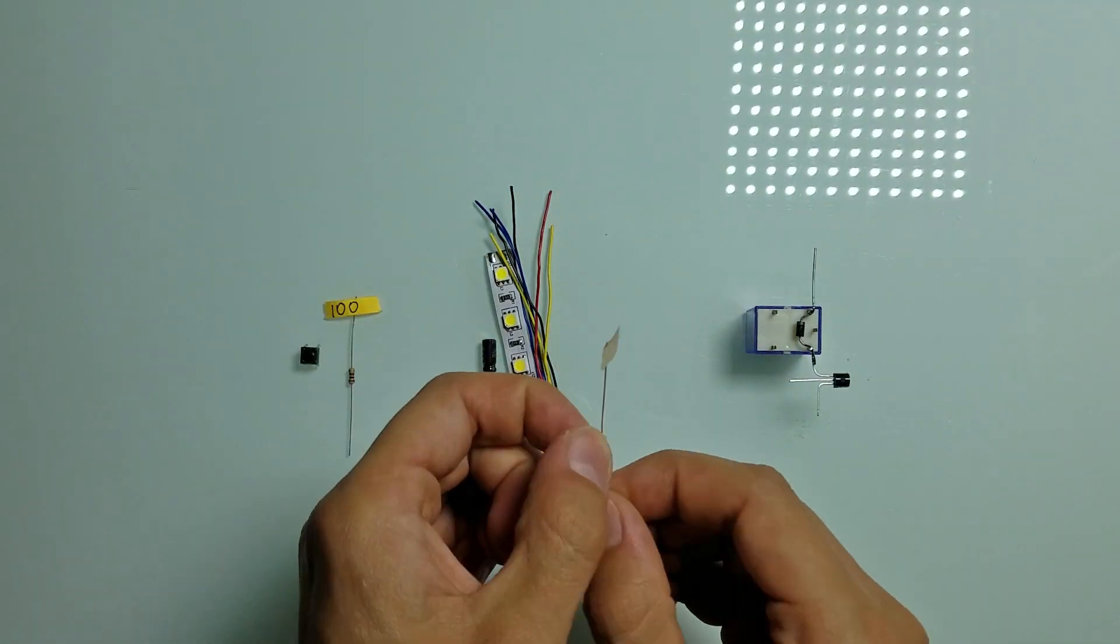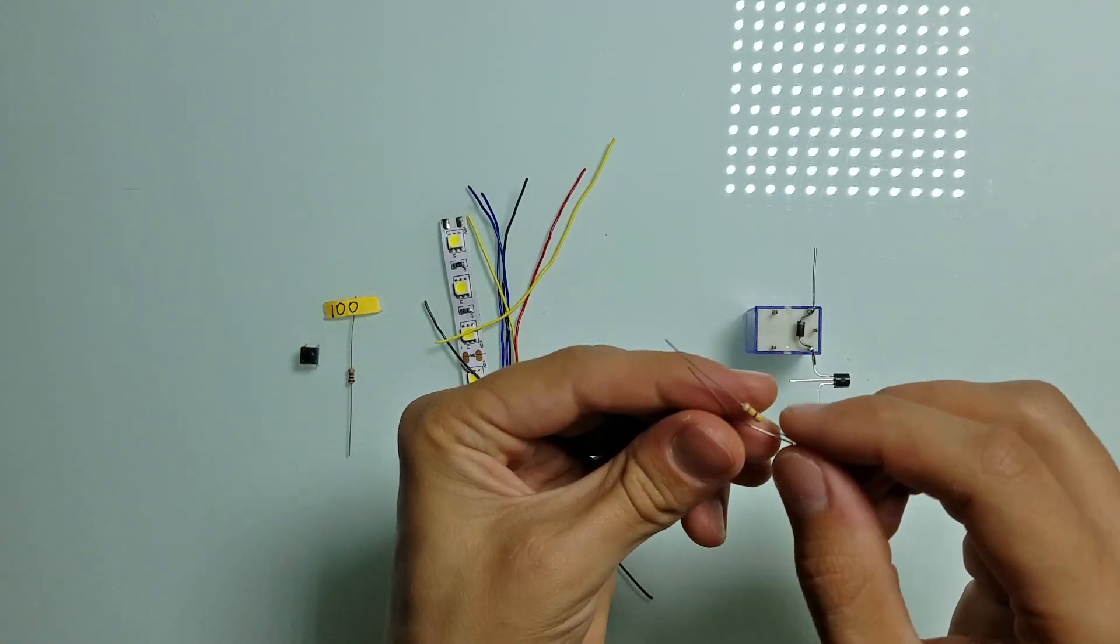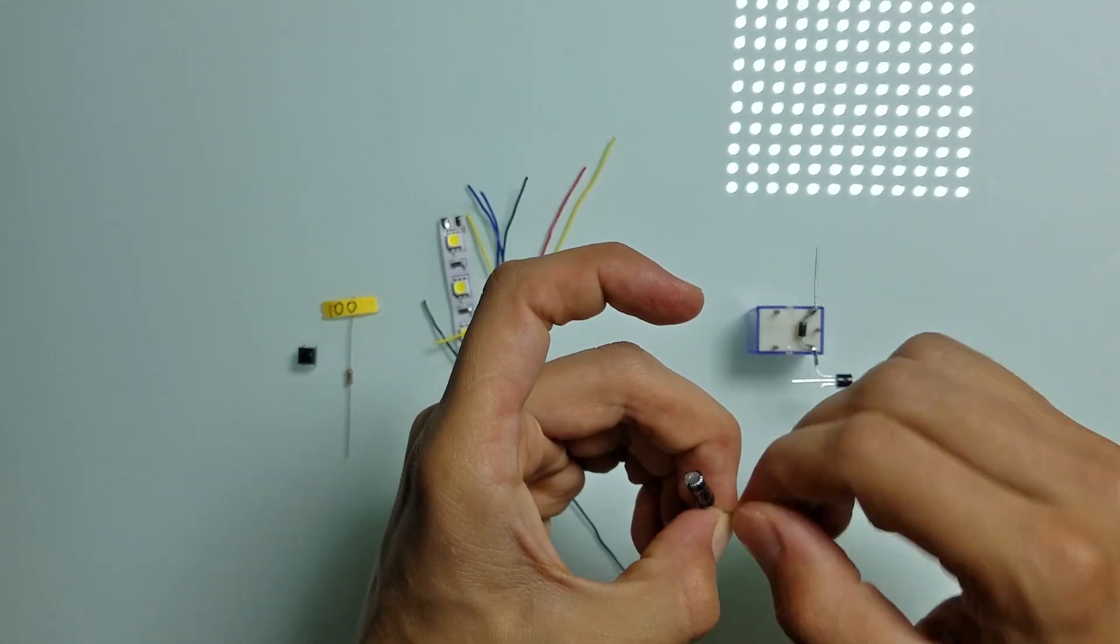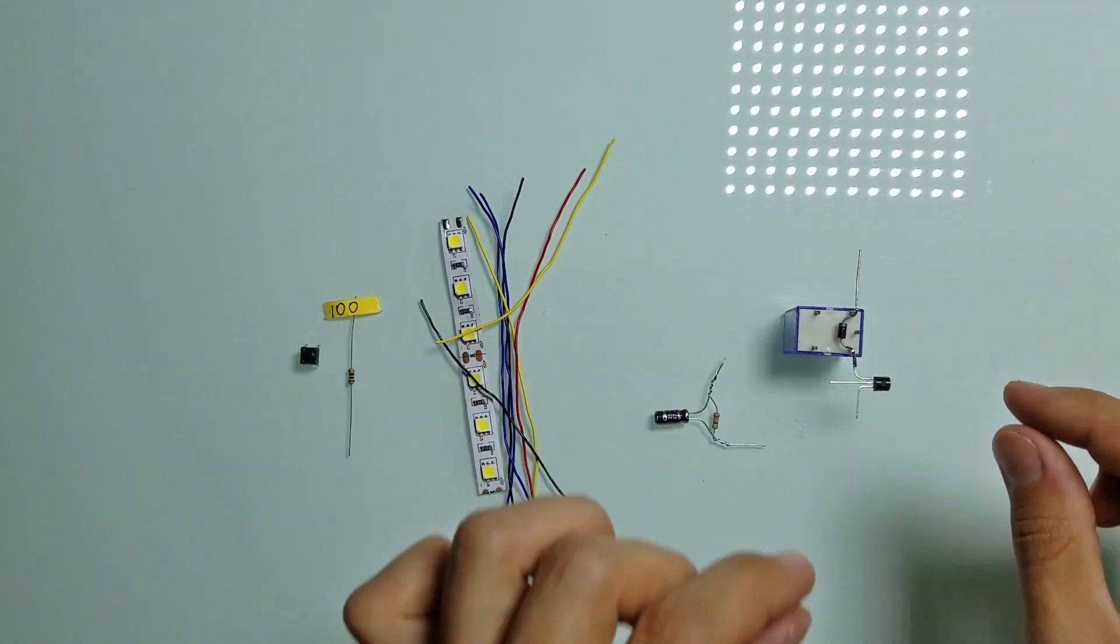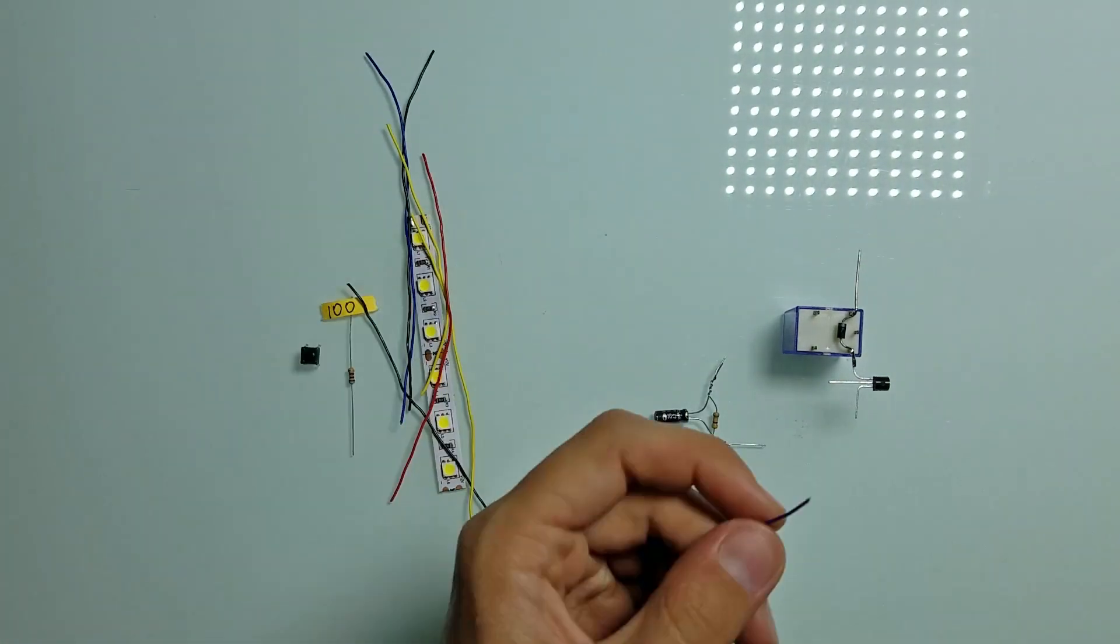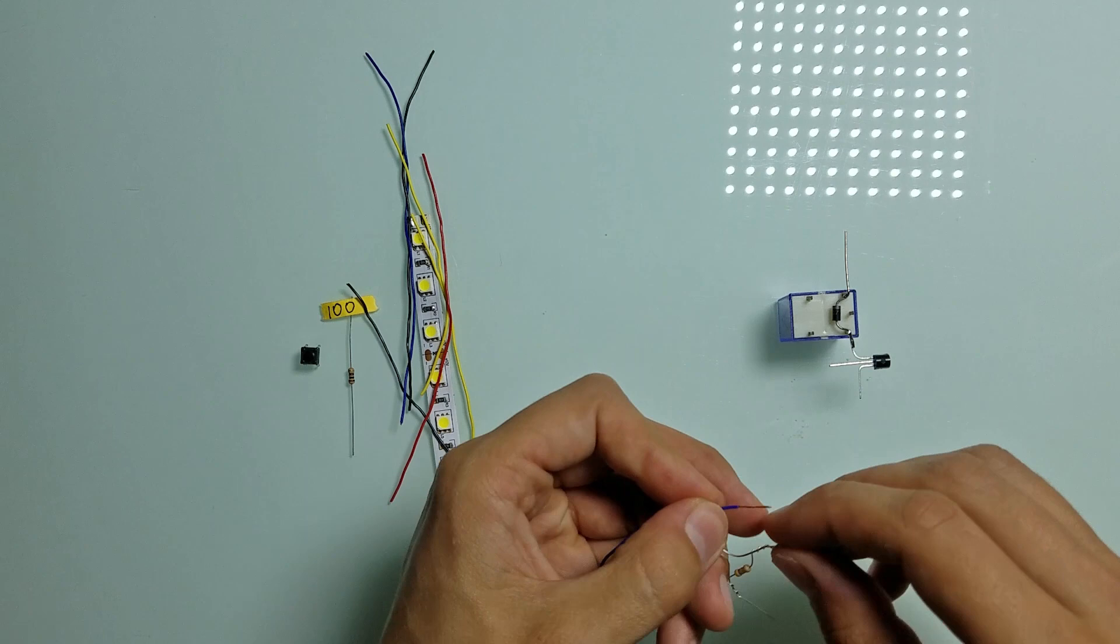let's connect together a 47uF capacitor and 470 kOhm resistor. Also let's connect a wire to the positive lead of the capacitor. This wire later will be connected to the button.